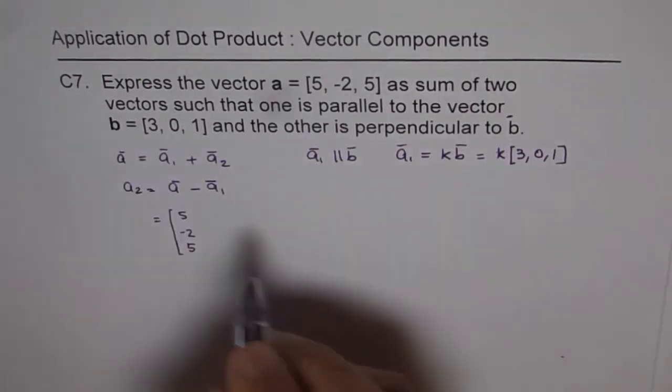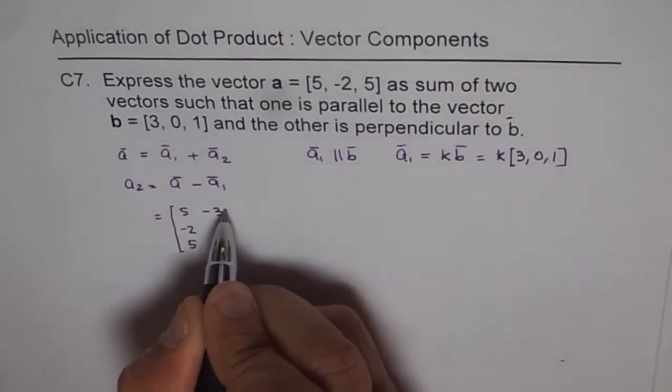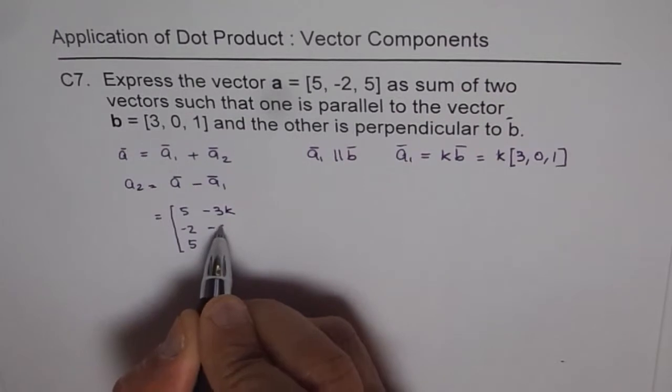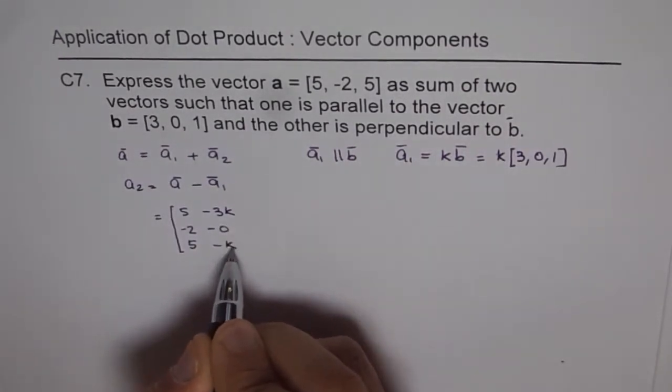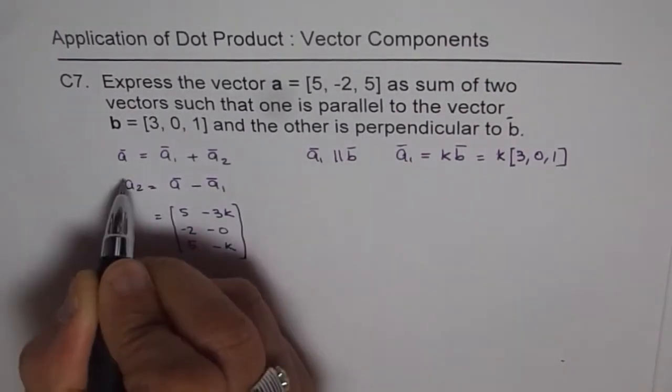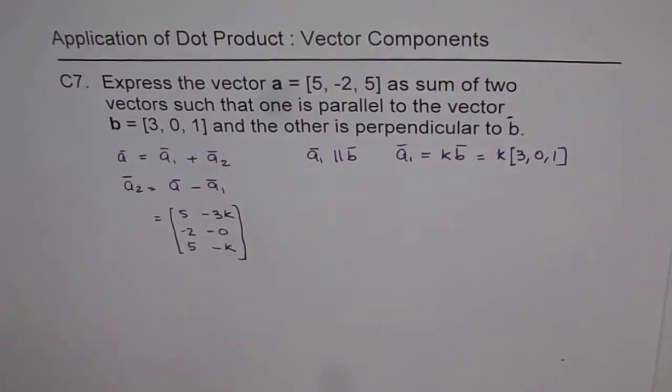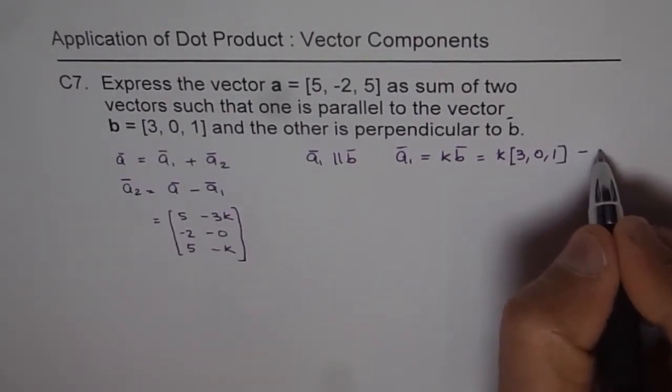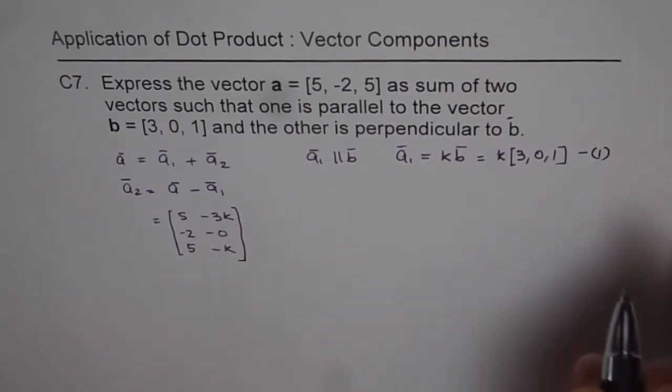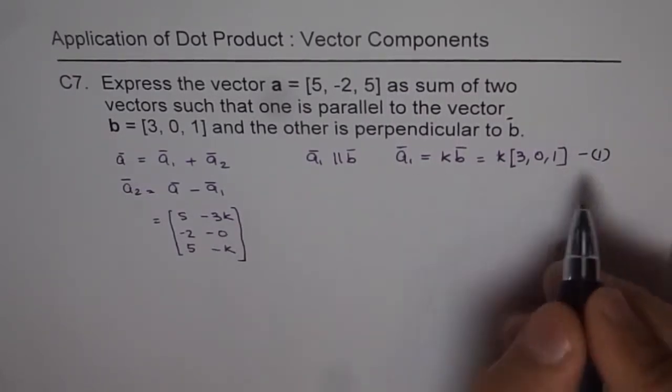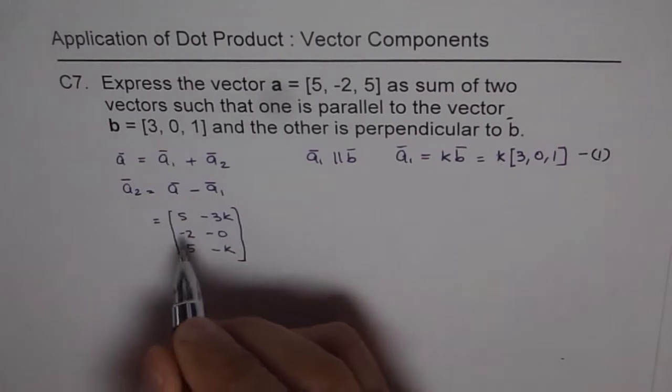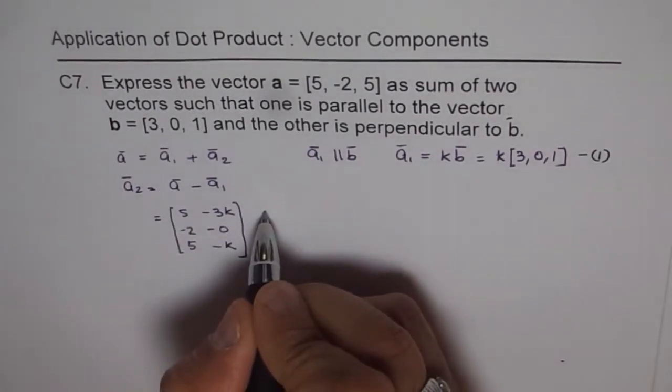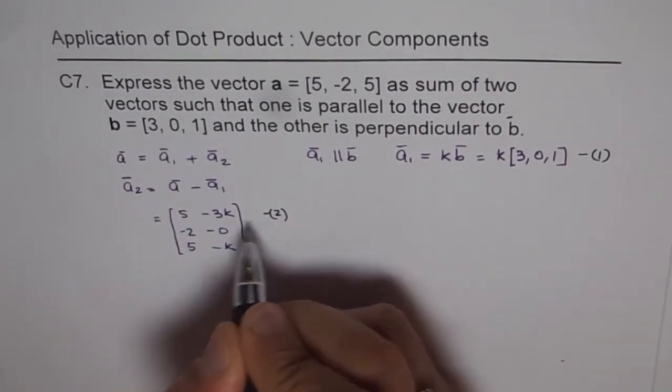So we can write a₂ as vector a, which is [5, -2, 5] minus a₁, that means minus this, so minus 3k, minus 0, minus k. So that becomes our vector a₂. Let me give equation numbers here, so that becomes easier for us to communicate. So this is equation number 1 relating to a₁, and here we get equation number 2, which will give us the value of a₂.